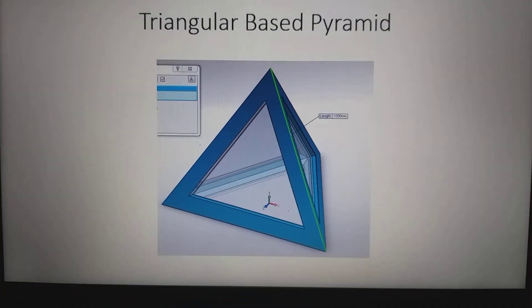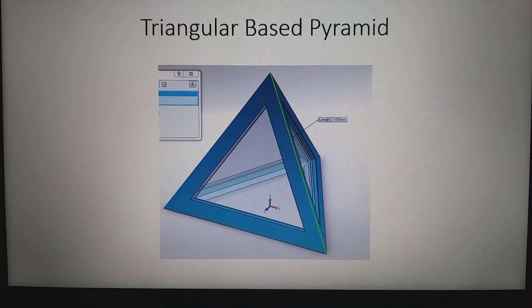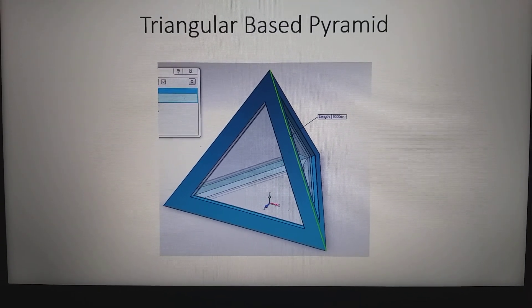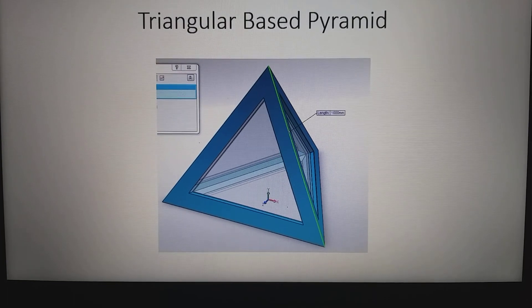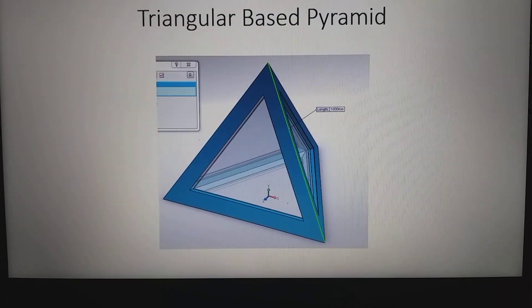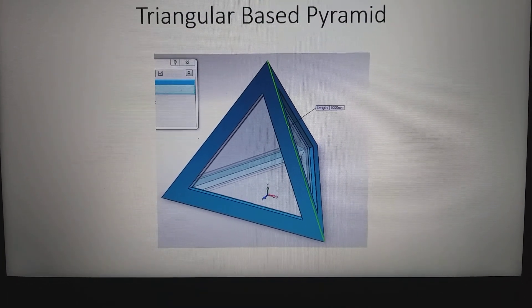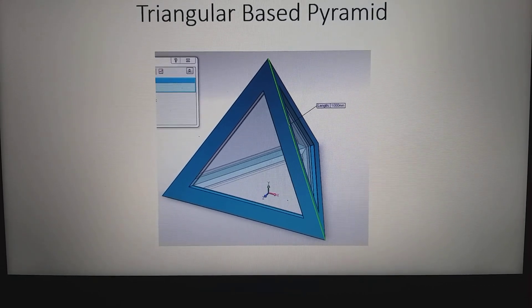And then this is called a triangular base pyramid. Just like the square base pyramid, all the sides meet at the top. But this one, the bottom of this pyramid is not a square. It is a triangle.